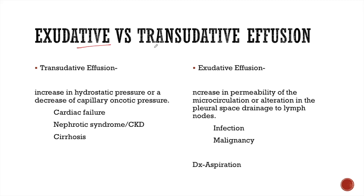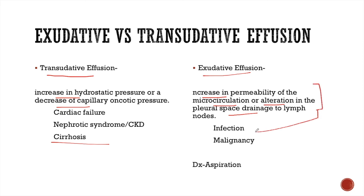There are two types of pleural effusion: exudative and transudative. Transudative effusion occurs with increased hydrostatic pressure or decreased capillary oncotic pressure, seen in cardiac failure, nephrotic syndrome, chronic kidney disease, and cirrhosis. Exudative effusion is due to increased permeability of microcirculation or altered pleural space drainage to lymph nodes, and is usually seen in infection and malignancy. These two types are very difficult to differentiate on X-ray and are diagnosed via aspiration.